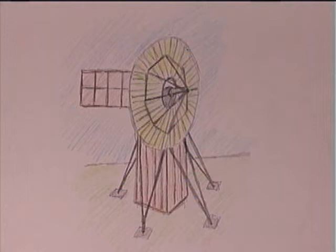In 1888, Charles Brush, an American, made the first practical wind turbine that generated electricity. He used the turbine to supply the electrical power for his large house.